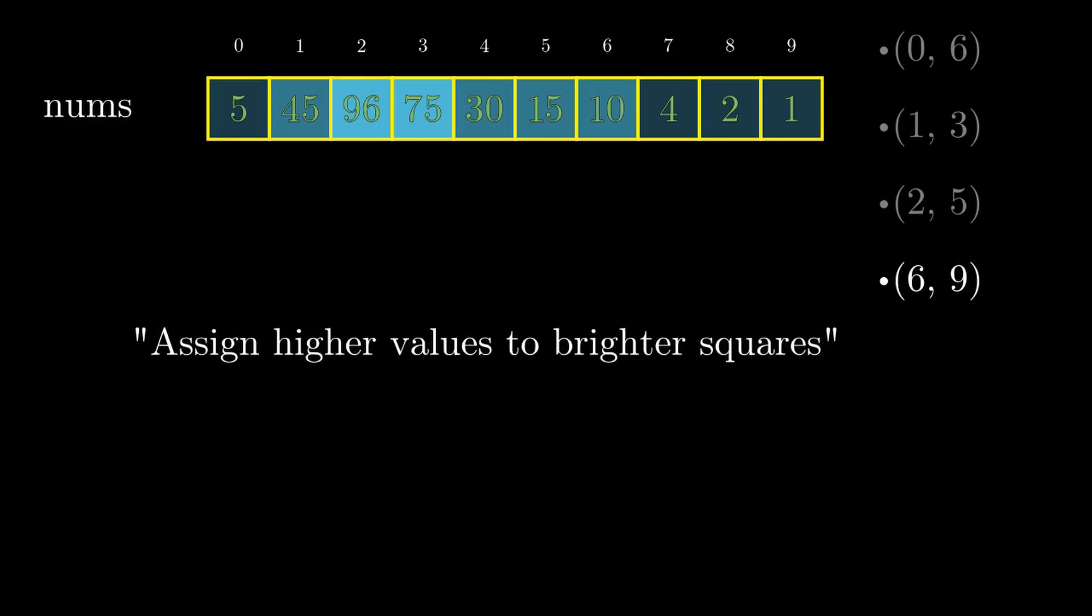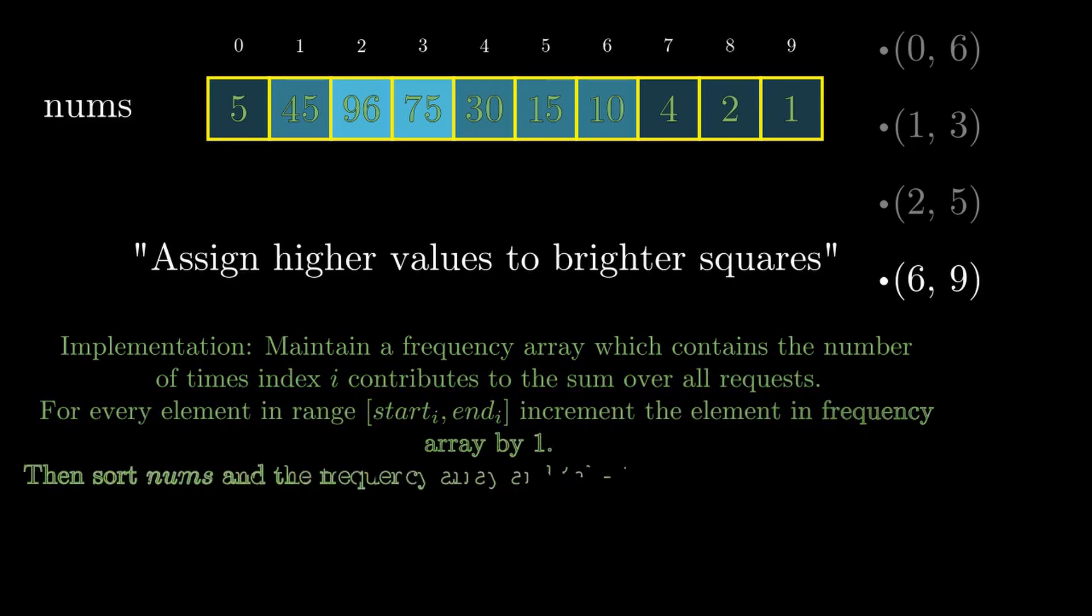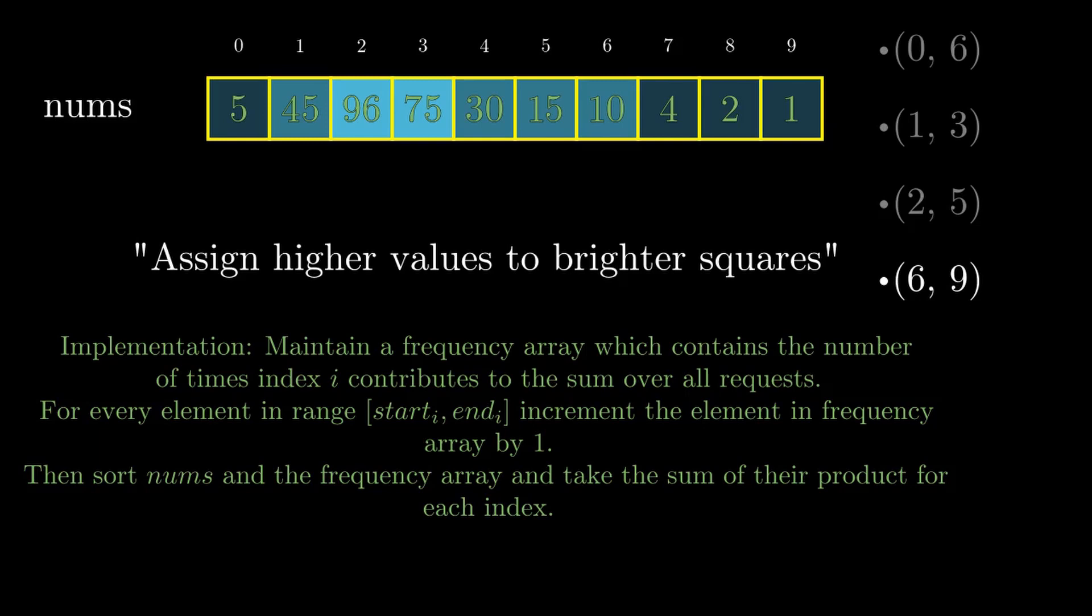How to implement this? We'll maintain a frequency array which will contain the number of times an index i contributes to the sum over all requests. Then for every request, we increment the value in the range start_i to end_i by 1.